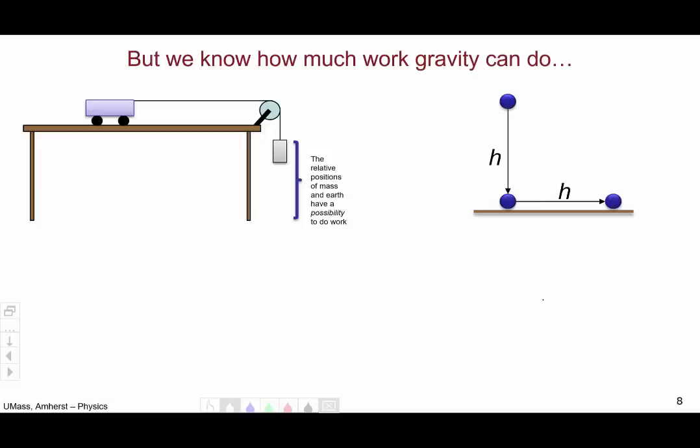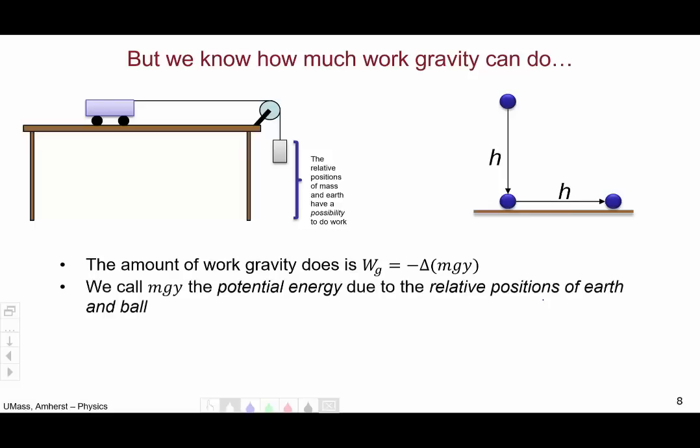But we happen to know how much work the force of gravity can do on that mass and consequently indirectly on the cart. Because we've looked at it for a falling ball earlier in this video. The amount of work done by gravity is always minus delta mgy.